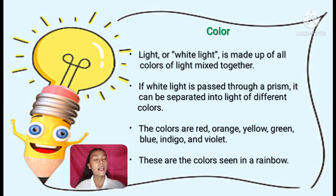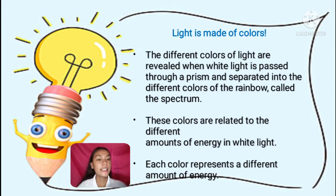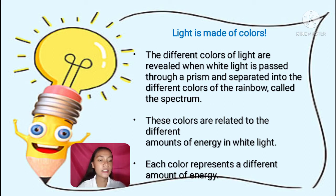Next is color. White light is made up of all colors of light mixed together. If white light is passed through a prism, it can be separated into light of different colors: red, orange, yellow, green, blue, indigo, and violet — the colors seen in a rainbow. These colors are revealed when white light passes through a prism and separated into the spectrum. Each color represents a different amount of energy. The white light passed through the prism does not create new colors — it separates the colors that are already there.